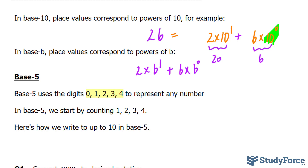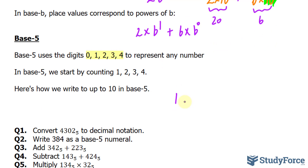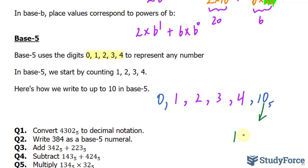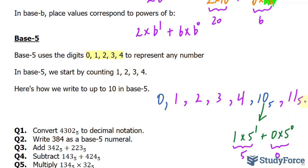Here's how we write up to 10 in base 5. The numbers 1, 2, 3, and 4 are no different, and we have 0 as well. If you want to write down the number 5, we write down 10 with the subscript 5. How does that work? This is the same thing as saying 1 times 5 raised to the power of 1 plus 0 times 5 raised to the power of 0. The product of the first term is 5 and the product of the second is 0. If I want to write down the number 6, I say 11 subscript 5.